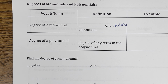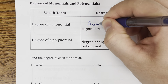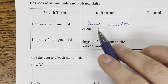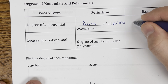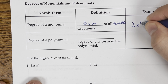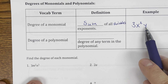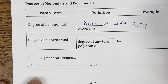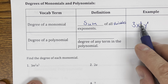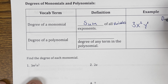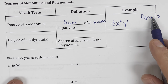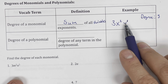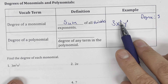The degree of a monomial is the sum of all variables' exponents. So if we write 3x squared y, we have to remember that y is raised to the first power. To find the degree, we add up all the variables' exponents: that's a 2 and a 1, so the degree is 2 plus 1, which is 3. Don't forget about the y to the first — 2 plus 1 is 3.